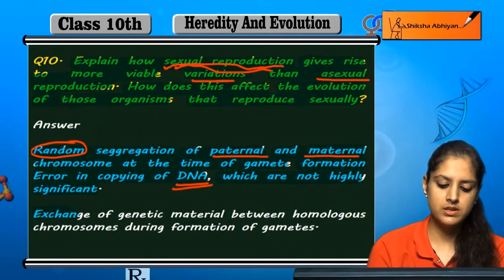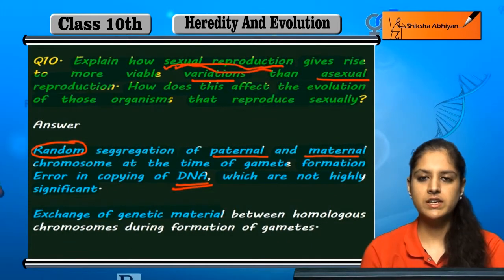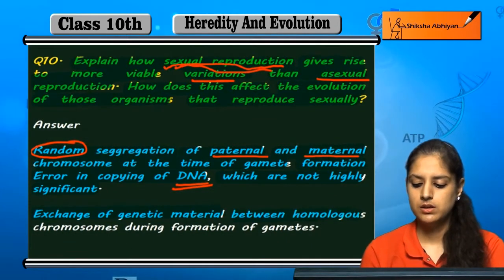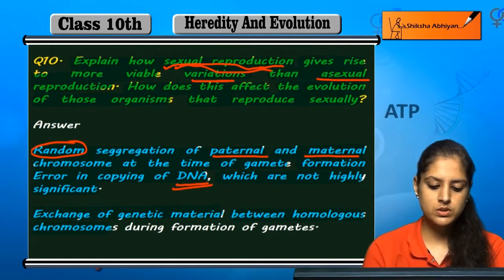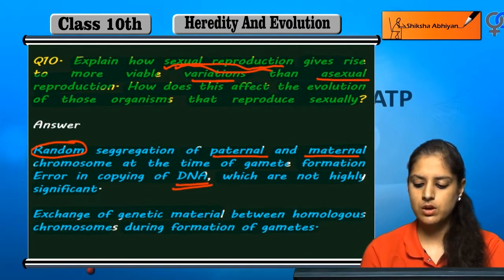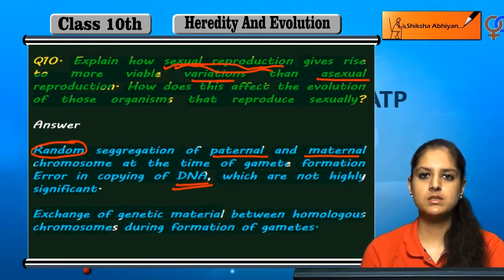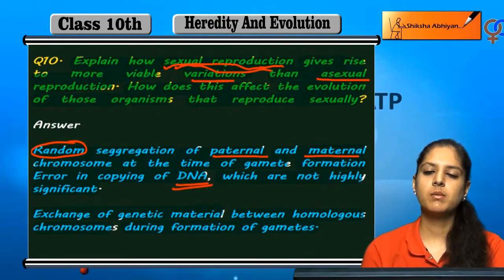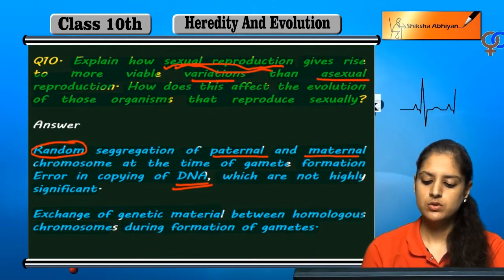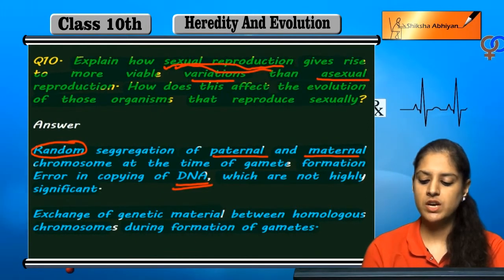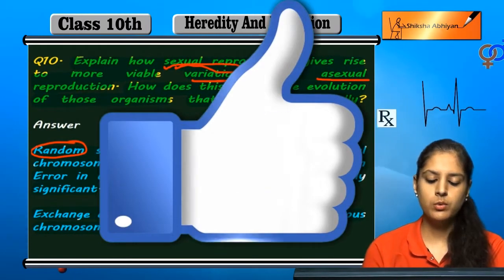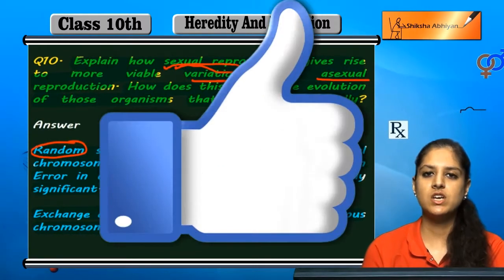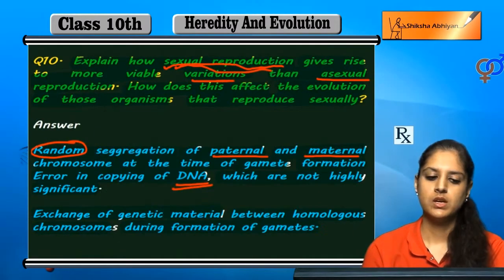The second reason is the exchange of genetic material between homologous chromosomes during the formation of gametes. When gametes form in sexual reproduction, the genetic material is exchanged between homologous chromosomes.